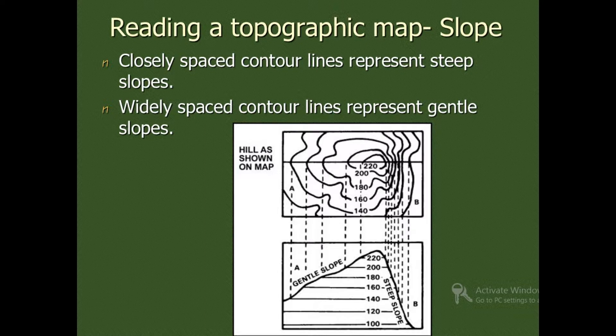If we want to locate the slope on the topographic map, you will find that contours are closely spaced. Closely spaced contour lines represent steep slopes. Widely spaced contour lines represent gentle slopes.